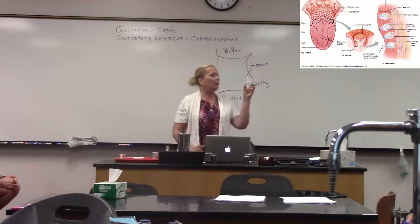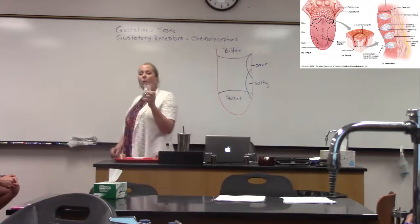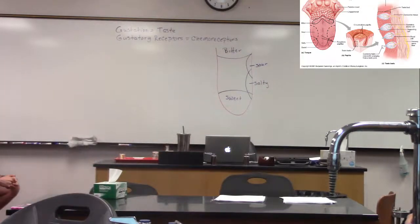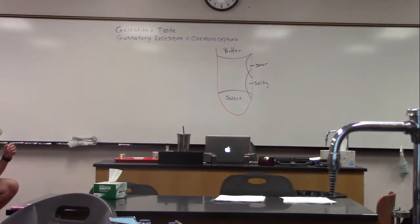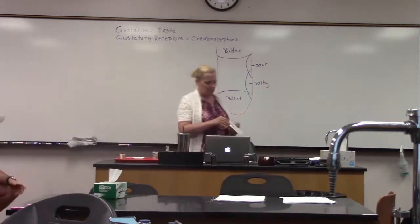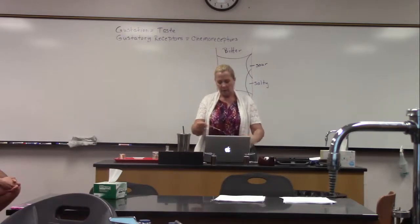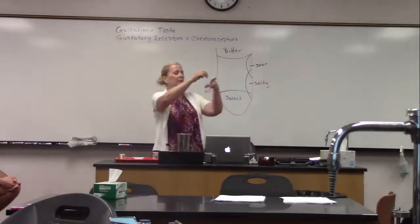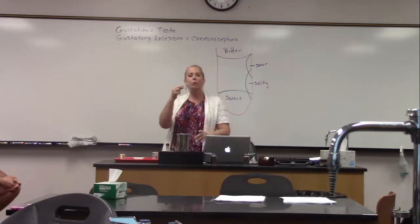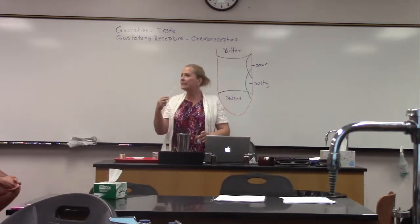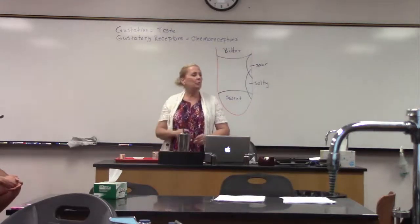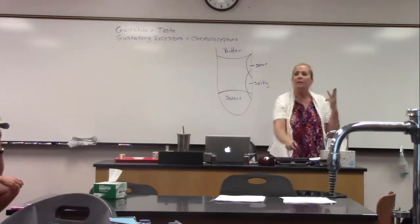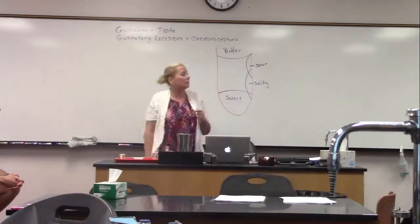On your tray, you're going to have four different beakers labeled one, two, three, and four. You'll take one of these applicators, dip them into each individual beaker, and paint it across the surface of your tongue. Then taste it to see where you taste these different tastes. The four beakers each contain one of the individual tastes: salty, sweet, sour, and bitter. These are the only types of tastes we can taste with our gustatory receptors.